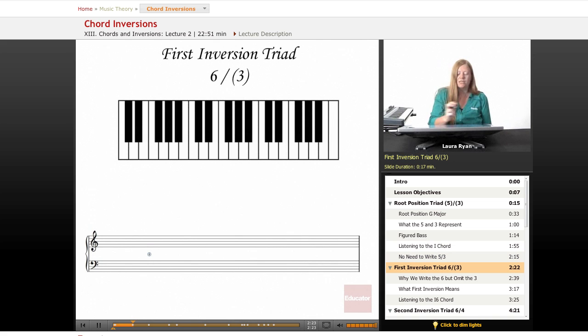Okay, first inversion. So we have new numbers up there. Let's stick to G and this first inversion looks like this. So this is one, six, and we'll write in parentheses three. The reason why the six is more important than the three is because between the bottom note of our chord and the root, there are...